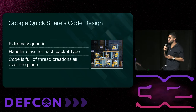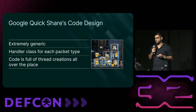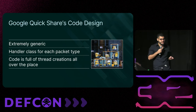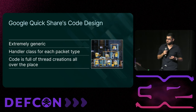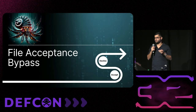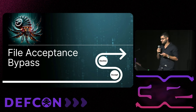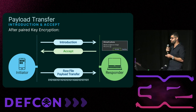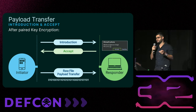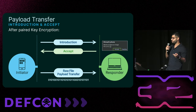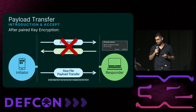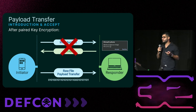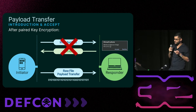One observation we made is that the code is extremely generic with a handler class for each packet type. The code is also filled with threads and async methods all over the place. The first logical vulnerability we introduce is a file acceptance bypass. To send a file, the initiator first sends an Introduction packet and waits for an Accept packet from the responder before sending the payload transfer packet. We asked: what if we skip the Introduction and Accept packets and send the payload transfer packet directly? We found that the file would be sent anyway — a complete bypass of file acceptance.